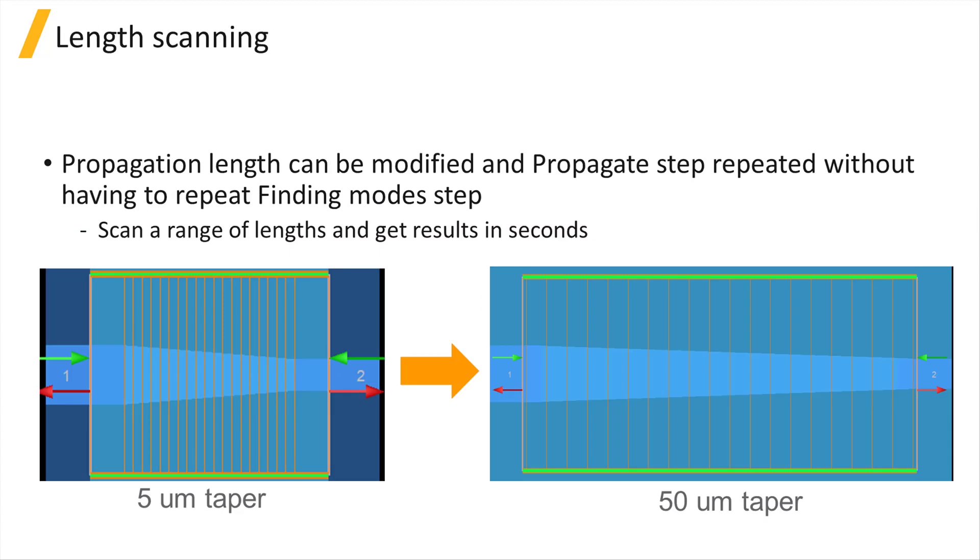The propagate step is a relatively fast calculation compared to the finding mode step, and it can be performed again and again for different cell lengths without having to repeat the finding mode step.